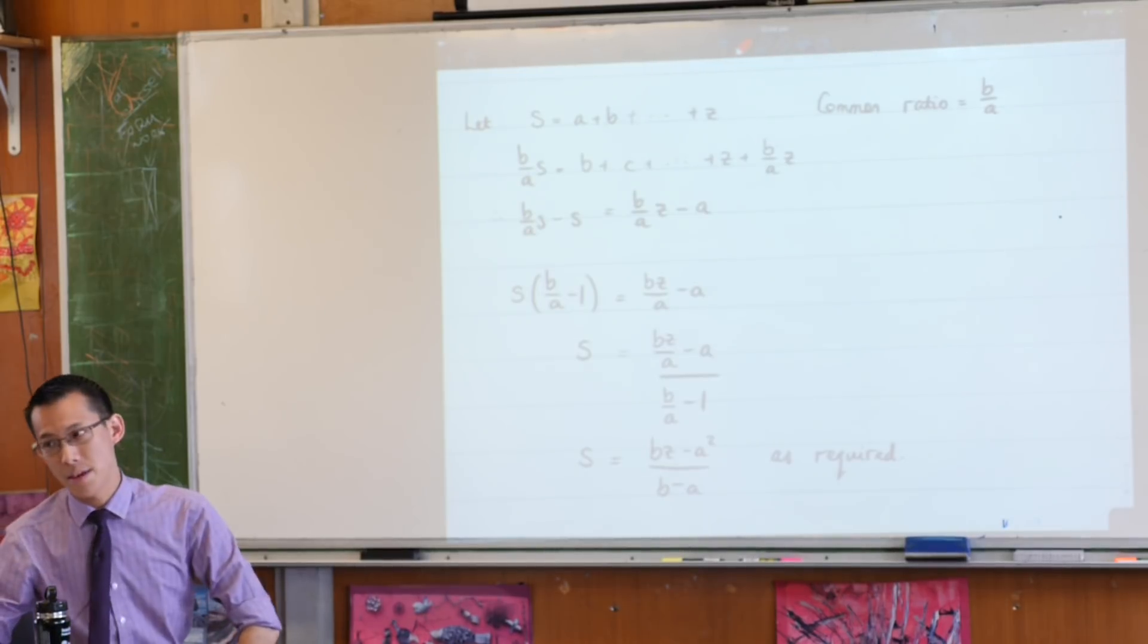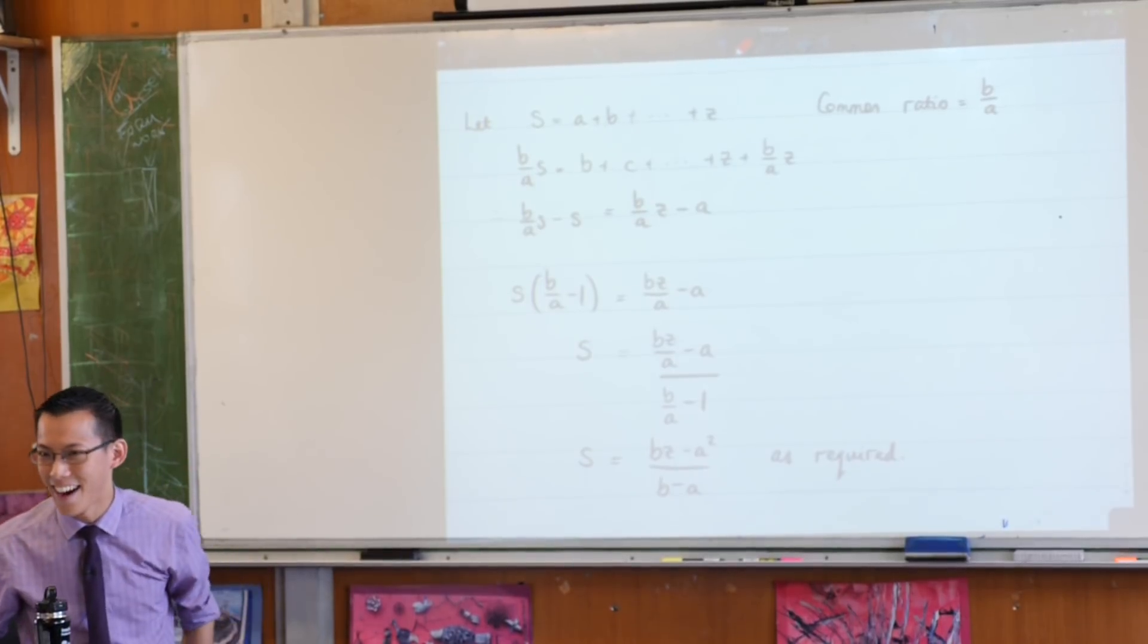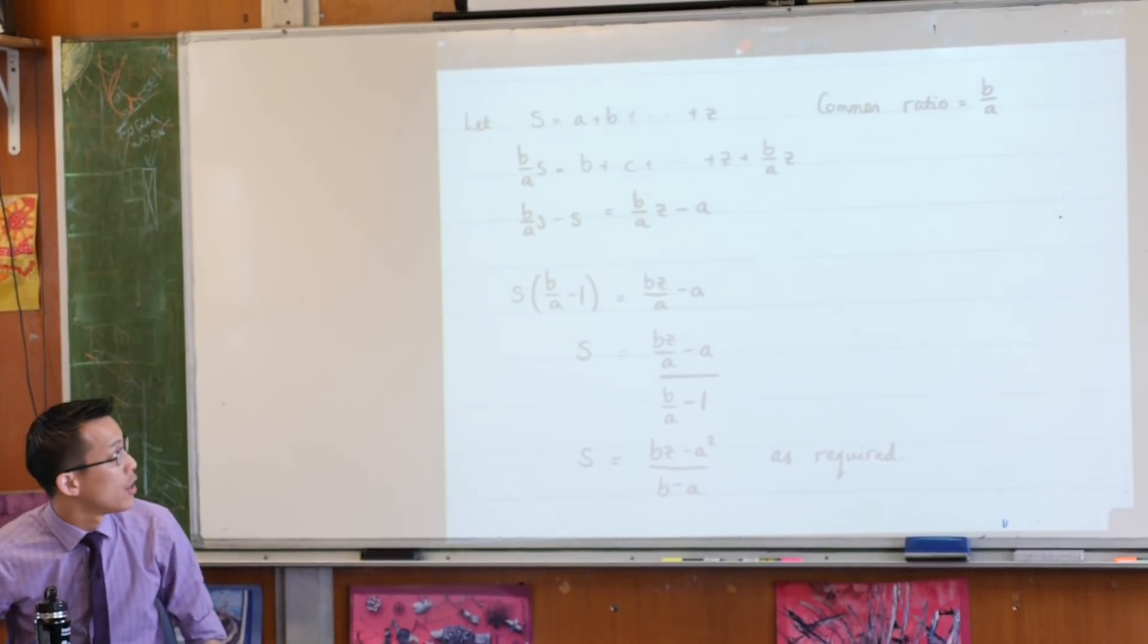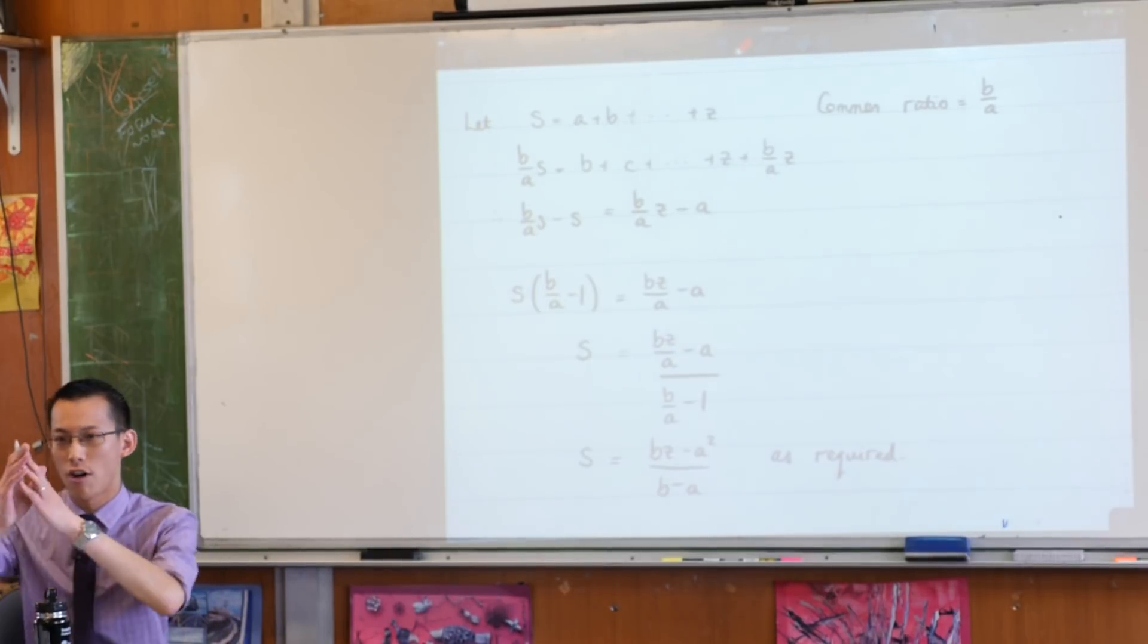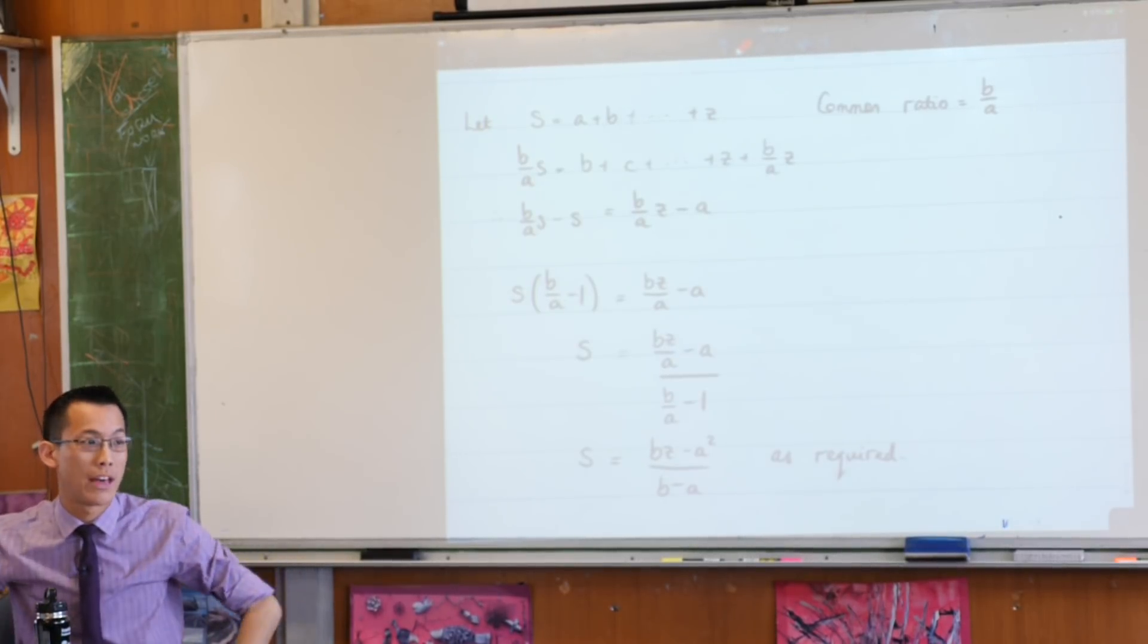A plus B plus Z, does that mean that there are 26 terms? No, and the clue is there's no 26 anywhere in the answer, the result you're trying to prove. You need to be able to show, I know how to get from a whole series, and what did I do to that in order to get the sum of that series?